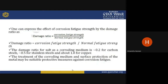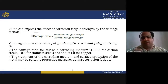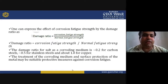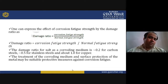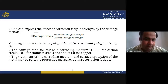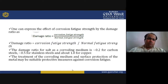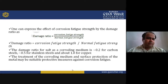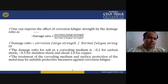One can express the effect of corrosion fatigue by the damage ratio: damage ratio = corrosion fatigue strength / normal fatigue strength. The damage ratio for salt as a corroding medium is approximately 0.2 for carbon steels, approximately 0.5 for stainless steels, and about 1.0 for copper.